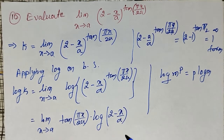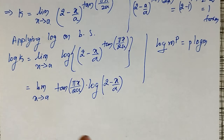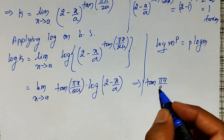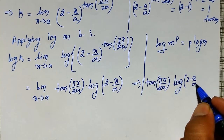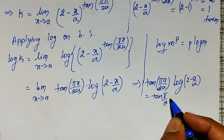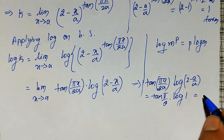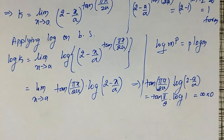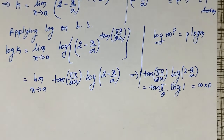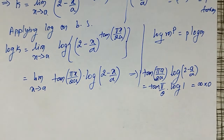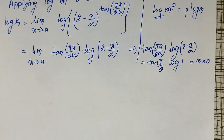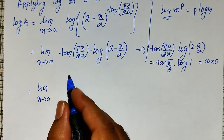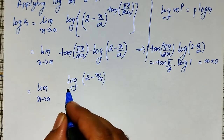Now let me check which indeterminate form this is. Substituting x equal to a gives tan(πa/2a) times log(2 minus a/a), which is tan(π/2) times log(1) — that is infinity times 0 form. Since it is infinity times 0 form, I cannot apply L'Hôpital's rule directly. I need to rearrange the terms to get 0/0 or infinity/infinity form. I will rewrite as log(2 minus x/a) divided by 1/tan(πx/2a).